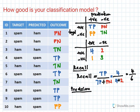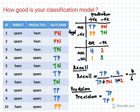Precision equals true positive divided by true positive plus false positive. For our model here, that is 4 divided by 4 plus 1, which gives us 4 over 5. So precision tells you how many of the predicted positives are actually positive.